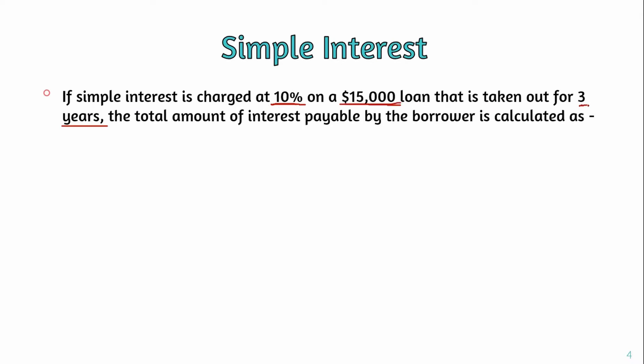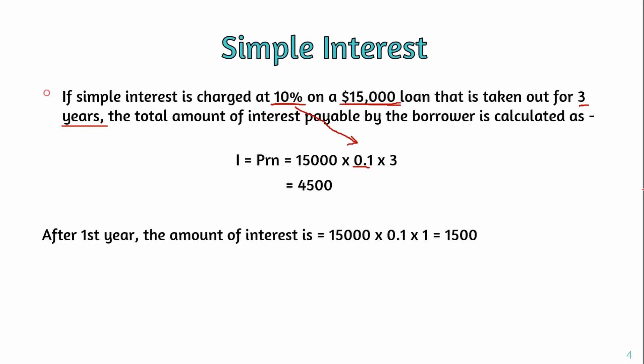Applying the formula with P = $15,000, R = 10% (which is 0.1 as a decimal), and N = 3 years, the calculation gives us a result of $4,500. So the simple interest on this loan is $4,500.